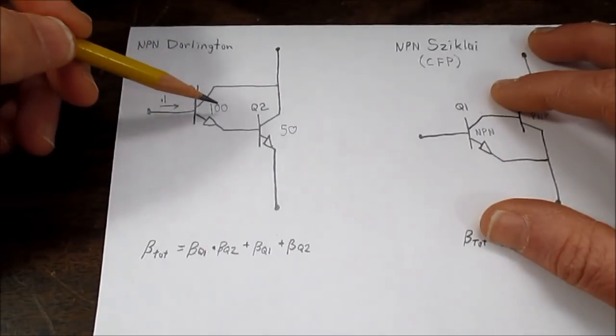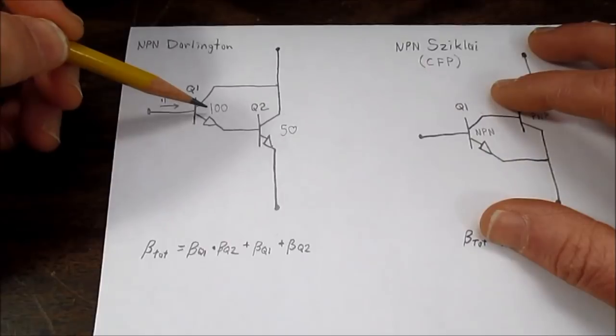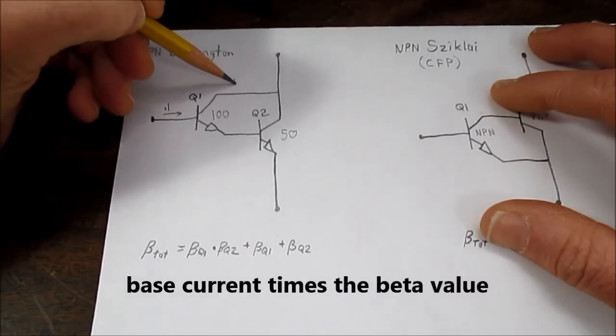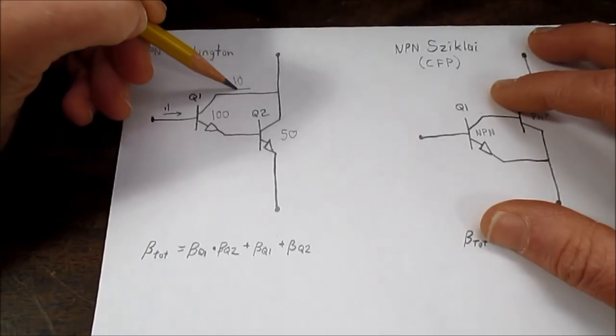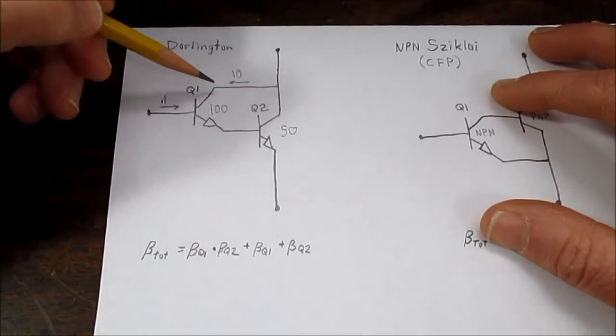So to find the collector current of this transistor, we take 0.1 times 100, and that's going to be 10 milliamps flowing in this circuit, this branch of the circuit actually.